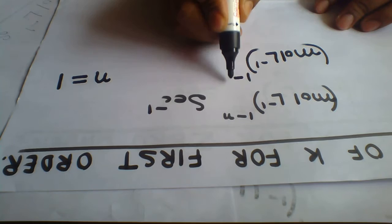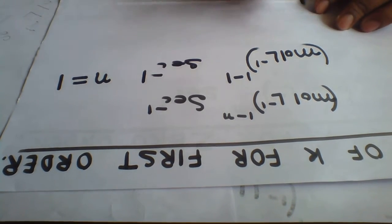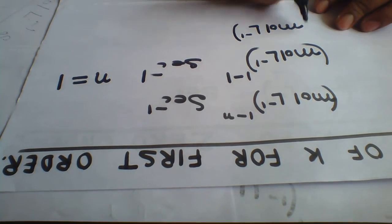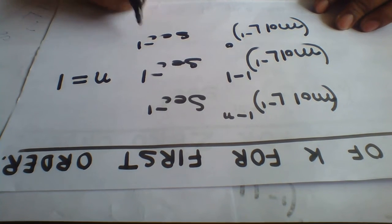1 minus 1 is 0, so moles per liter to the power 0, second inverse. Anything to the power 0 is 1, so this term becomes 1. 1 times second inverse, this is only second inverse.